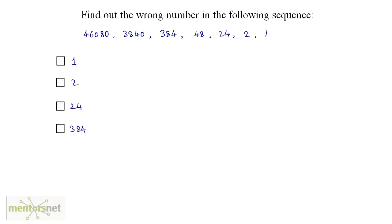For the next question, looking at these numbers you might think subtraction is involved since the numbers are reducing. But the numbers are reducing drastically, so subtraction is not the case. We need to divide each number by some value to get the next, since division reduces numbers quickly while subtraction reduces them gradually.